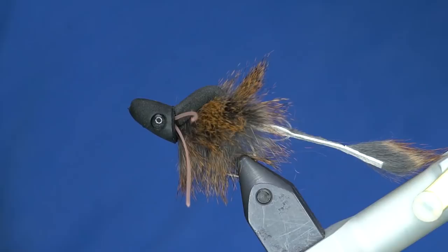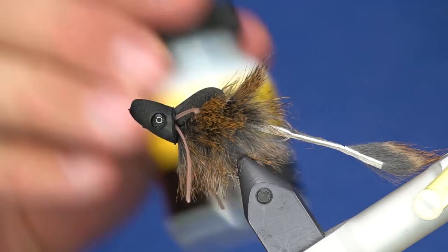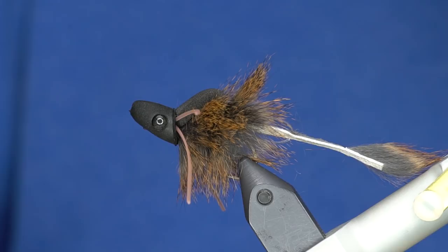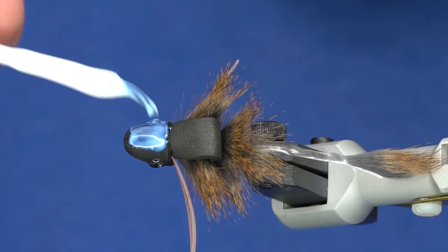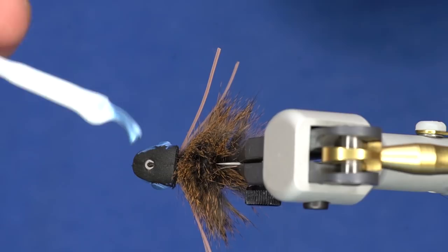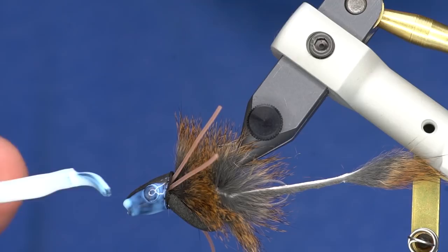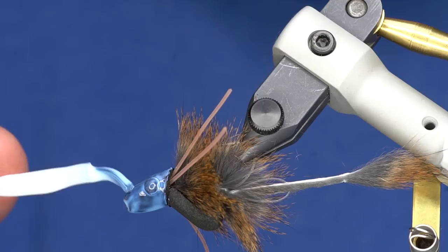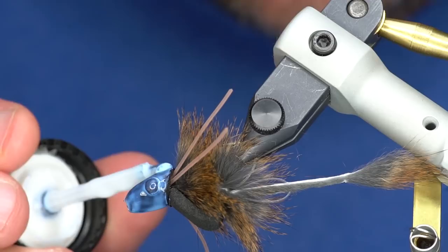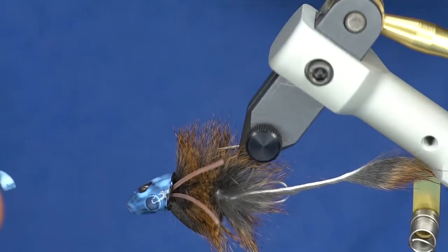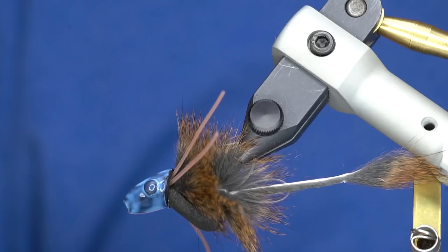Now if I were going to go fish this as is, those eyes would pop out before it even hit the water, so I reinforce the head with Loon Soft Head. You just paint a light coating over the head. It looks milky when it goes on but it cures very clear and very flexible and durable. This is the very best coating for these foam popper style heads. You kind of need to leave a little gap under here for the hook eye - you don't want to coat over that eye, it's really hard to get out of there.